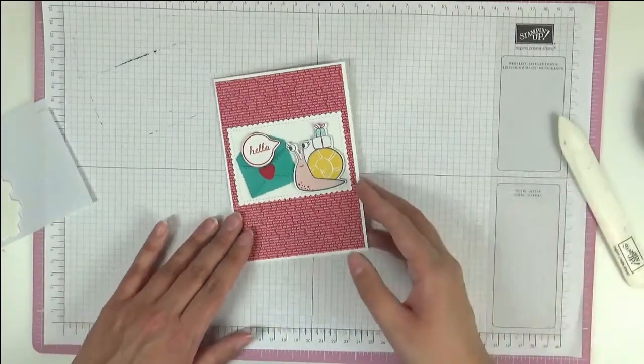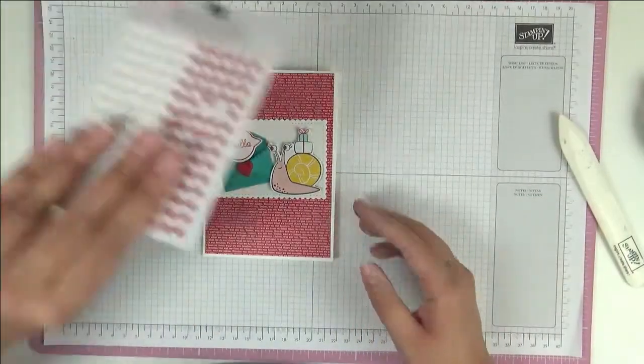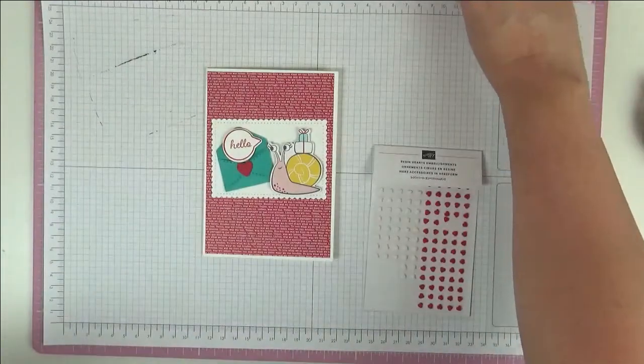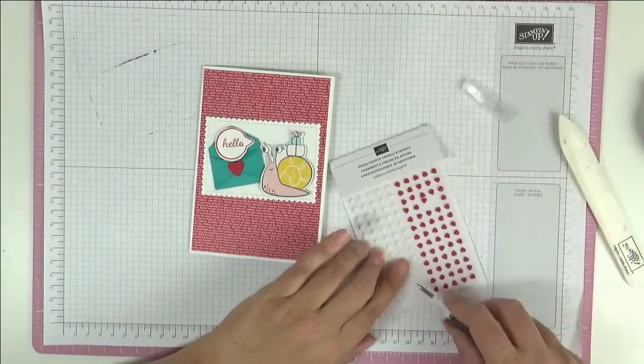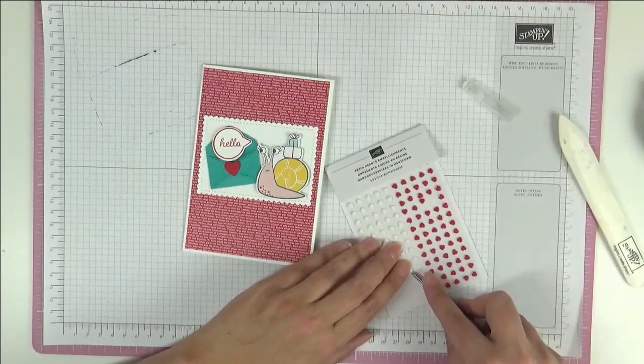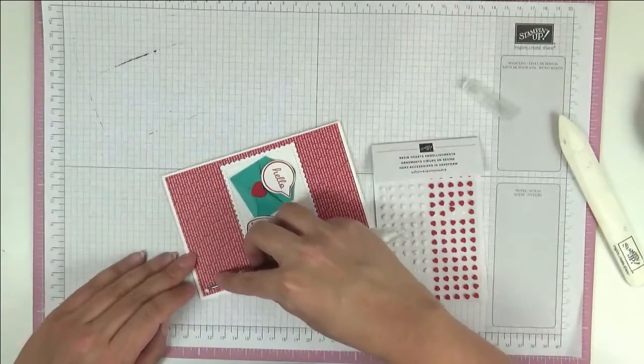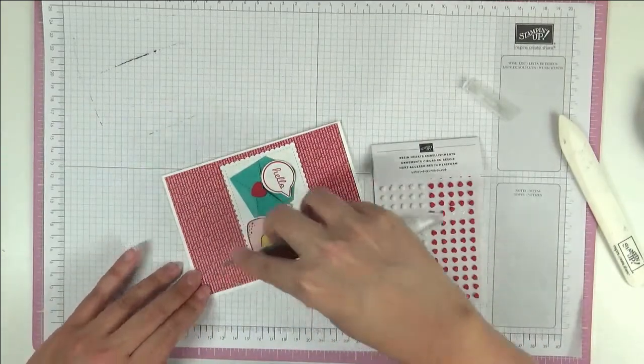Okay so that's what we've got so far. Now I'm going to bring in these, these are the resin heart embellishments and we're going to use just some of these here at the bottom just a little row of three.